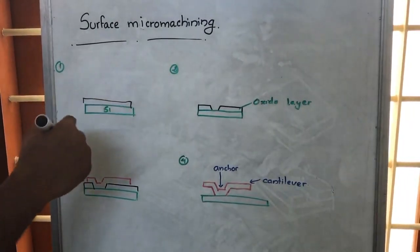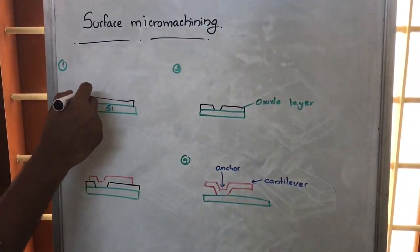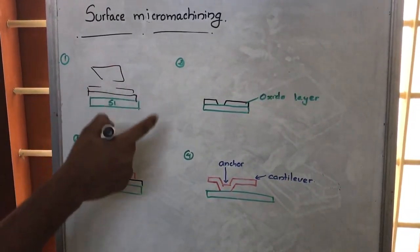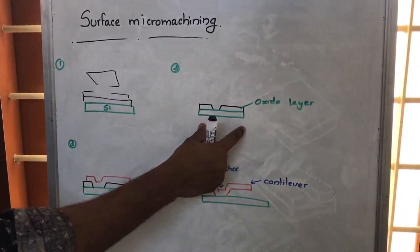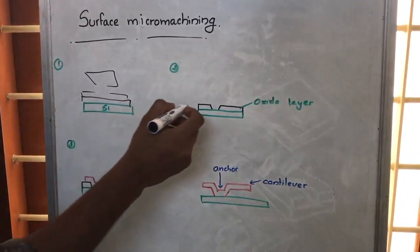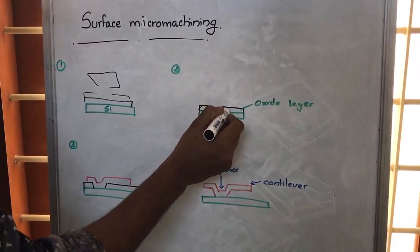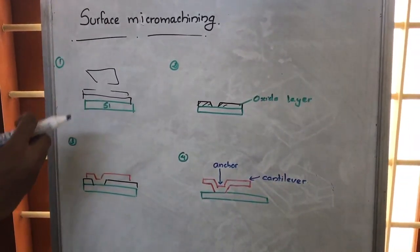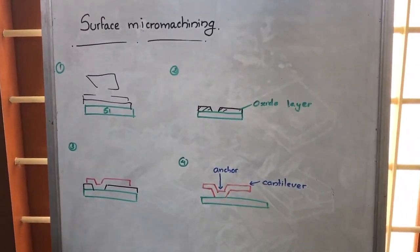Then by using some photolithography techniques, first we will be placing a photoresist, then we will be using a mask and we will be patterning a structure somewhat like this. Here, this particular layer of oxide is actually a sacrificial layer. It is not the actual structure that we want to make, but it just acts as a sacrificial layer.